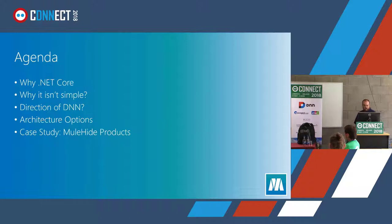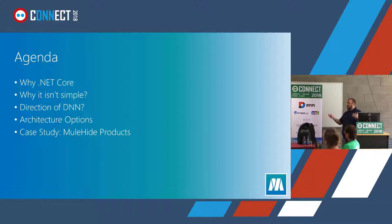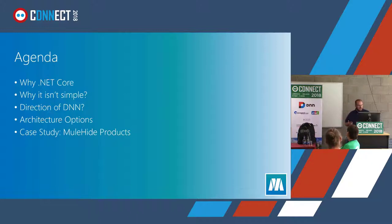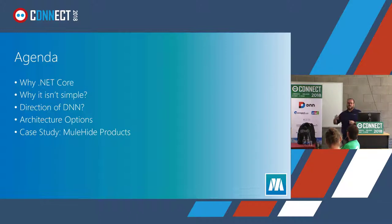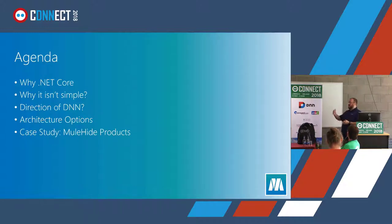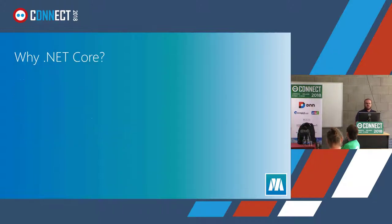I've got an agenda broken down a little bit. We'll talk about why we're discussing .NET Core and why it's important — what that really means for us as developers, and for those of you implementing rather than developing, what it might mean for you. Then we'll talk about why it's not simple, why we can't just flip a switch. We'll cover the direction of DNN, technology migrations we've already seen, and architecture options to better prepare you for whatever transition may come.